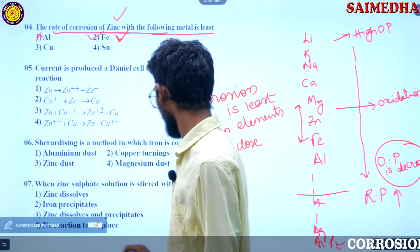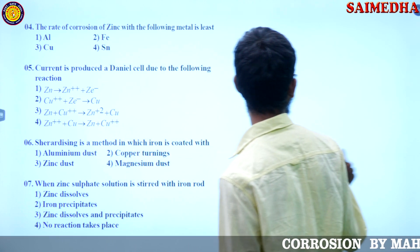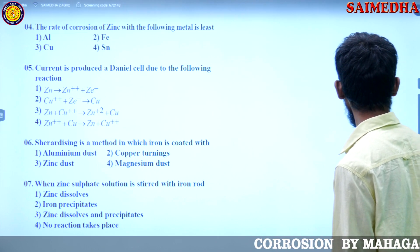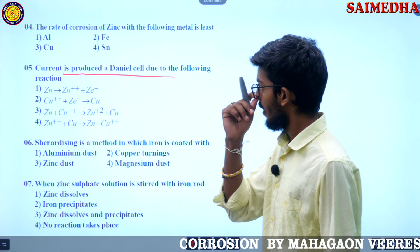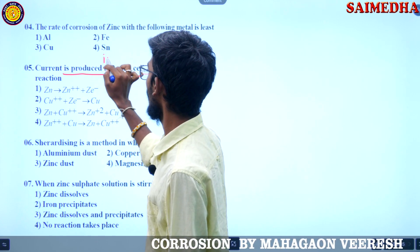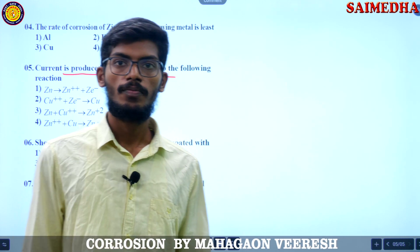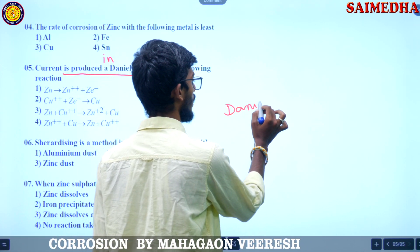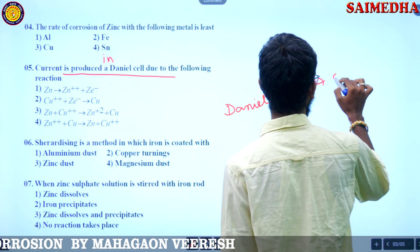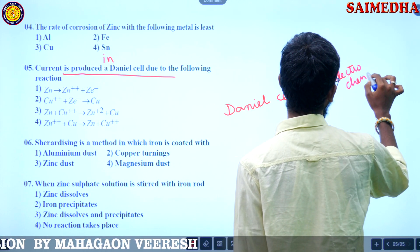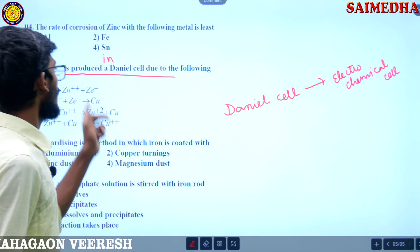So now we'll go with the next question. What is saying now? Current is produced in a Daniel cell. In a Daniel cell, current is produced due to the following reaction. Daniel cell is nothing but an electrochemical cell.